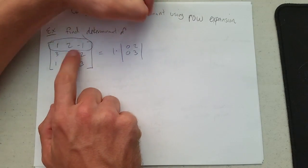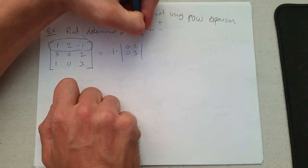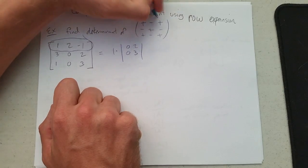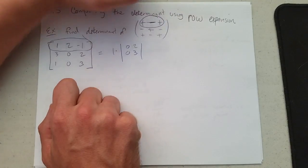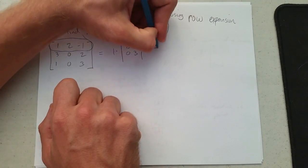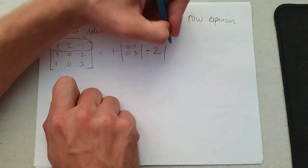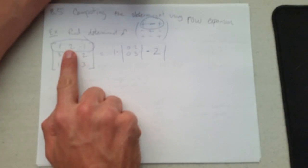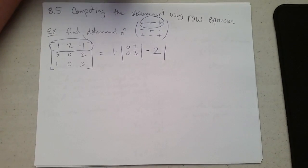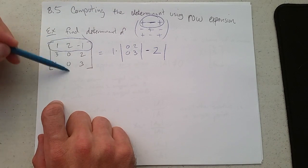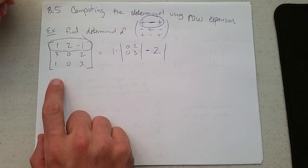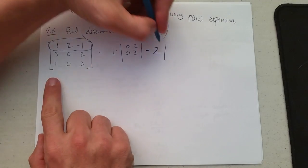Now the sign pattern is important. It goes plus, minus, plus. So now it's minus 2 times—cover up column 2—we have 3, 2, 1, 3.